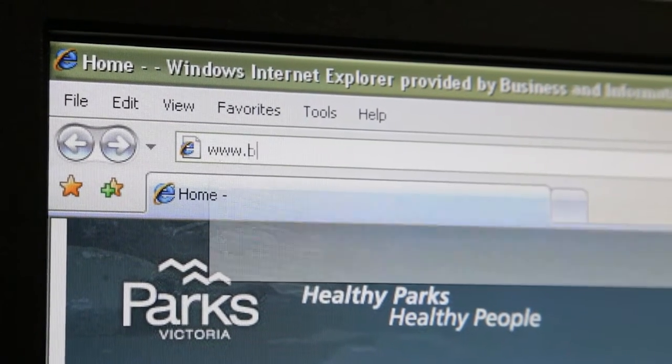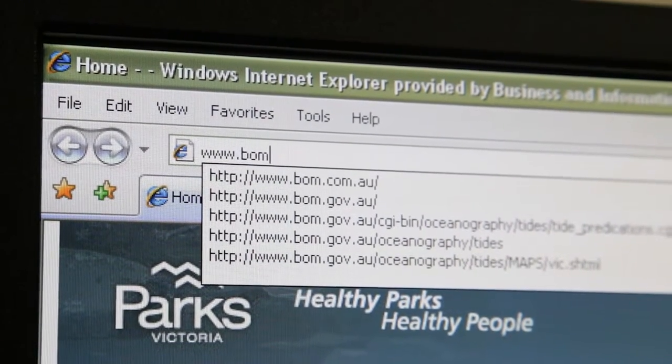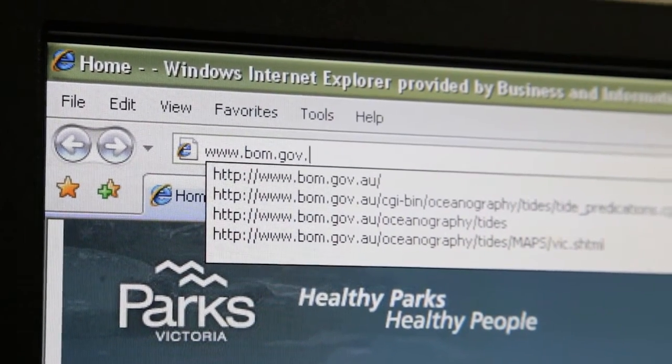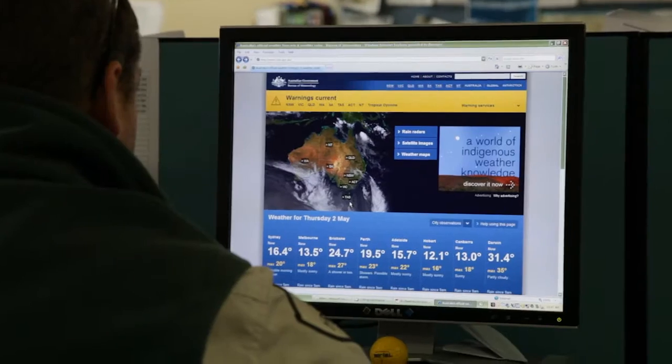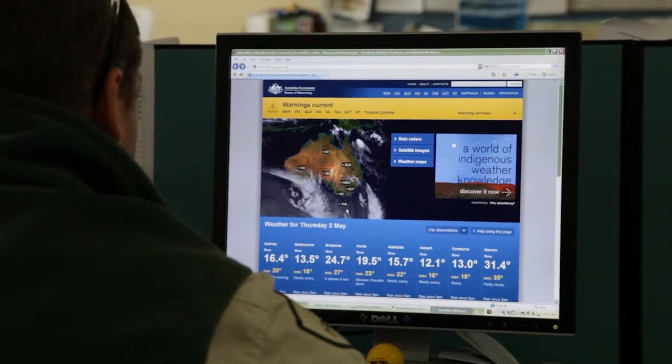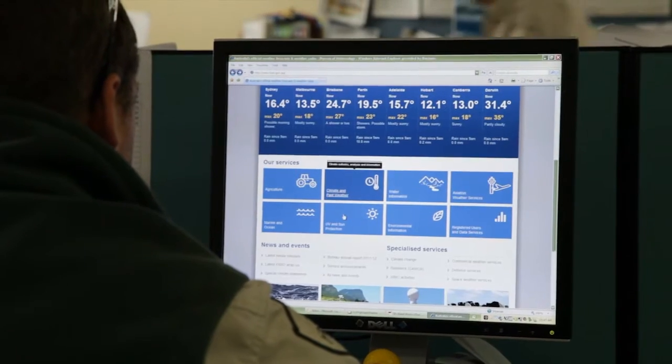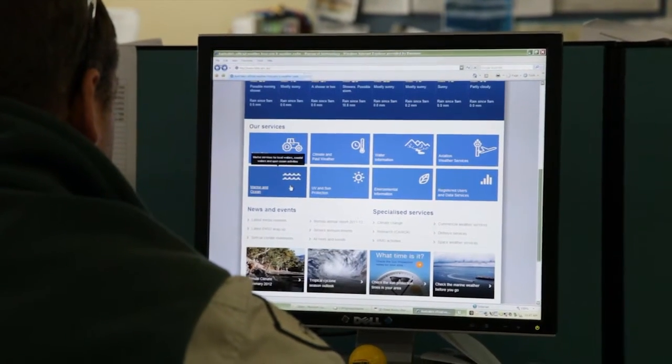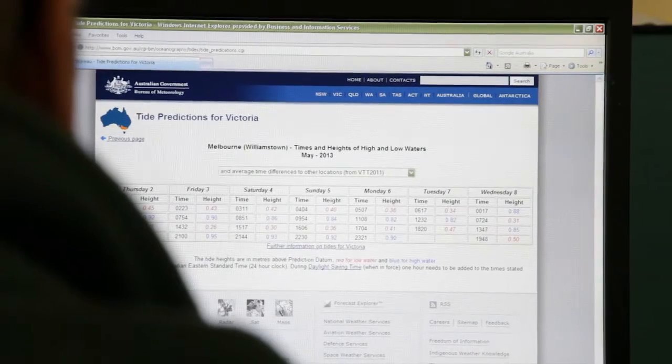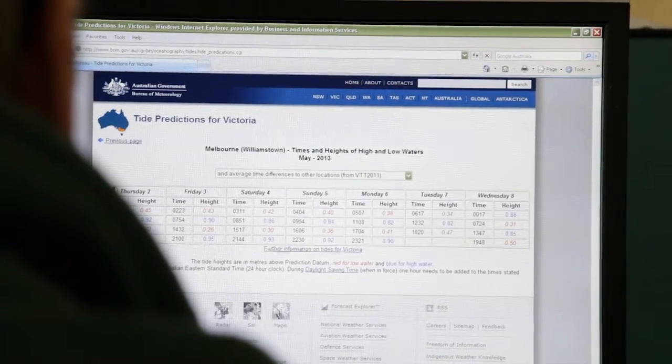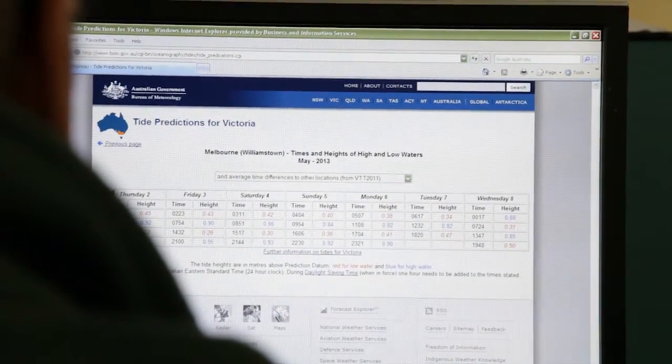Before you start this activity you need to select a date and time that coincides with a sufficiently low tide. This information can be found on the Bureau of Meteorology website. Important to remember when daylight savings is in effect you need to add an hour to the times.